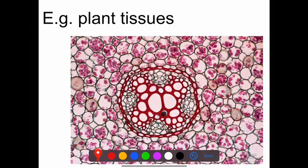Now I'm not expecting you to be able to identify what these are, but this is just to show you different types of tissues working together in an organ system. You can see that all of these cells here look very similar.